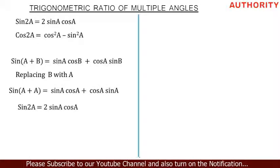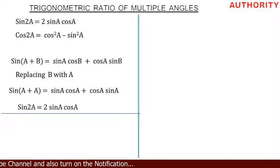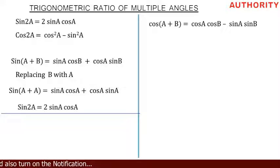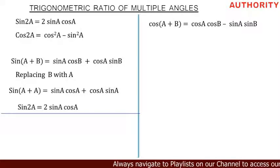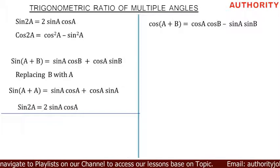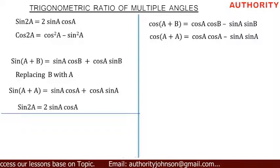Now let's take the second part: cos 2A is equal to cos squared A minus sine squared A. You also remember that in one of our lessons on compound angles, we showed that cos (A + B) is equal to cos A cos B minus sine A sine B. Now let's replace B with A in this expression.